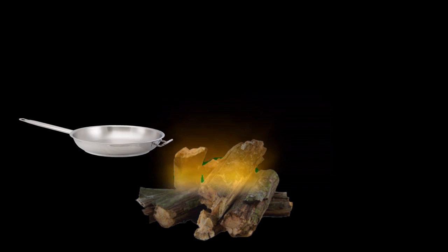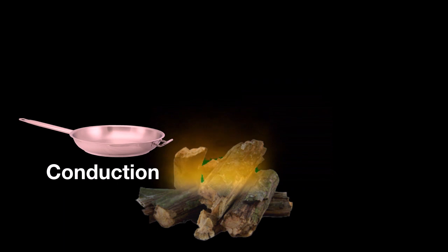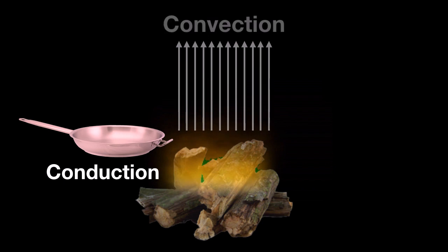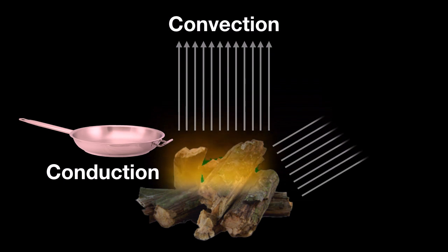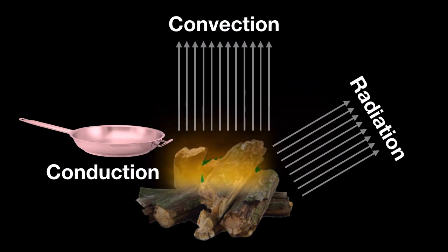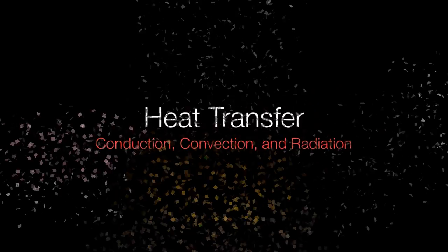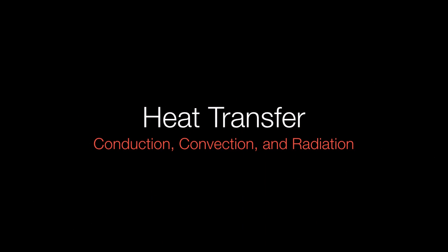We can summarize all three in one simple picture. If we have a campfire and a frying pan, the frying pan will heat up due to conduction — molecular contact. The air above the fire will rise due to convection. And energy will radiate out to the sides through radiation. Those are our three methods of heat transfer: conduction, convection, and radiation.